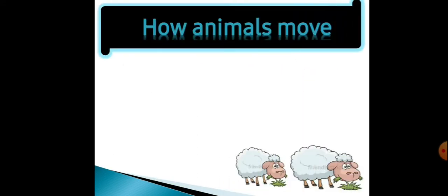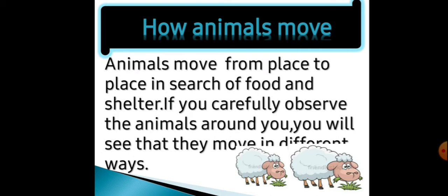Our next topic is how animals move. Animals move kaise karte hain, woh hum aaj jaanenge. Animals move from place to place in search of food and shelter. Animals ek jagah se doosri jagah pe jaate hain kyunki woh khaana dhoondhne ke liye aur apne liye rehne ke liye chhat dhoondhne ke liye. If you carefully observe the animals around you, you will see that they move in different ways.